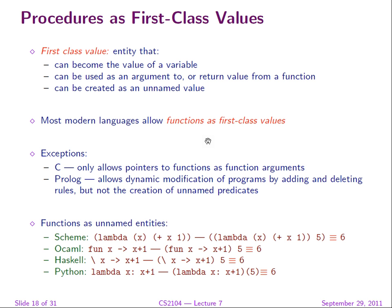We move into the next part of the lecture: procedures as first-class values. A first-class value is something that can become the value of a variable, be used as an argument or return value, and be created as an unnamed value. Integers are first-class values in all languages — you can assign an integer to a variable, pass it as an argument, return it, and the number 3 stands for itself without needing to be called x.